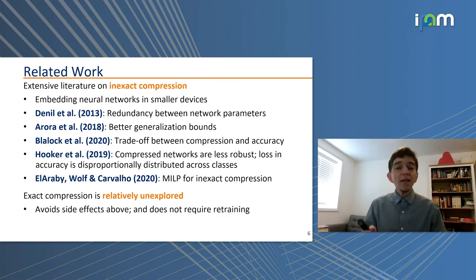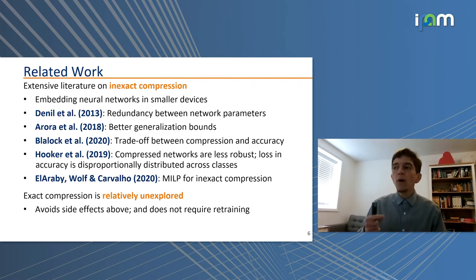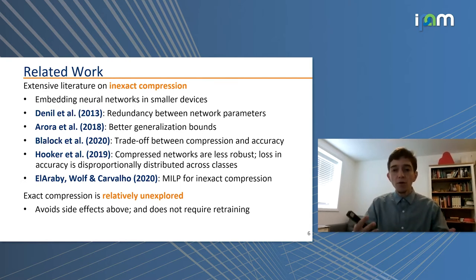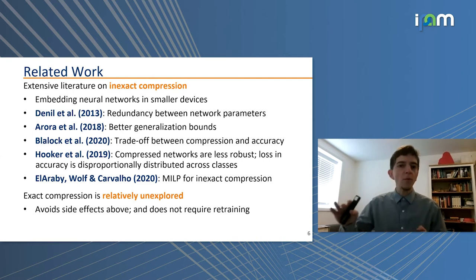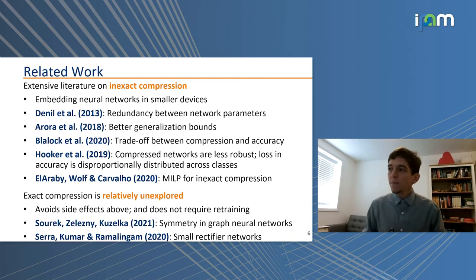Exact compression is a relatively unexplored topic, and it's important because we can avoid the side effects of inexact compression — the disproportionate accuracy loss and the need to retrain the network after removing neurons. Since we're preserving exactly the same mapping from X to Y, there's no need for retraining. As far as I'm aware, there is one upcoming ICLR paper on identifying symmetry in graph neural networks and a paper we presented last year on compressing small rectifier networks at CPAIOR — and that's it.